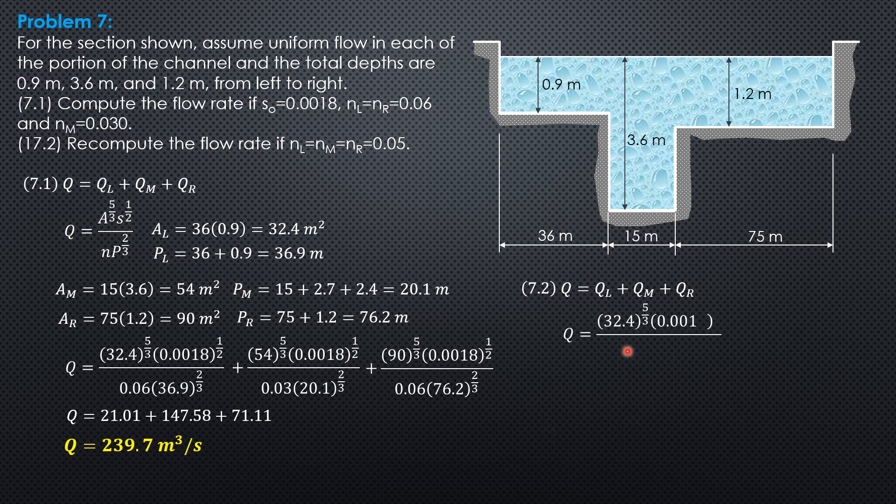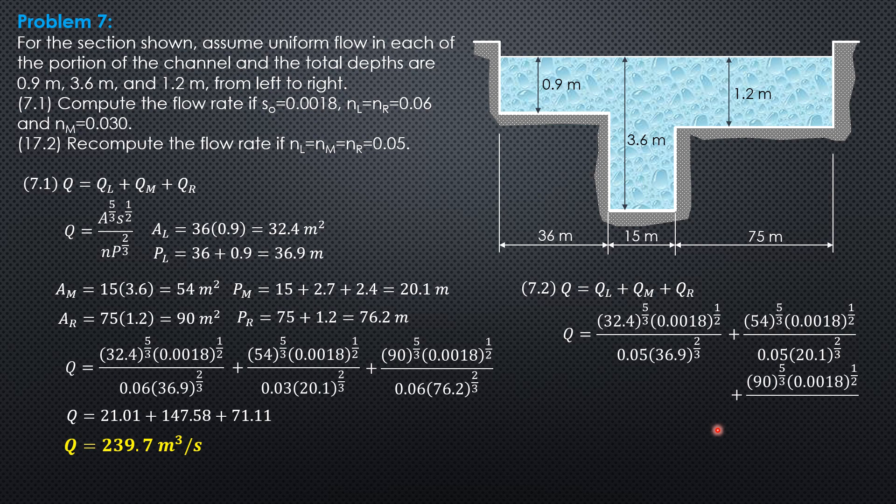Area 32.4 to the 5/3, 0.0018 to the 1/2, 0.05, 36.9 to the 2/3 plus 54 to the 5/3 quantity 0.0018 to the 1/2 over 0.05 times 20.1 to the 2/3 plus 90 to the 5/3 times 0.0018 to the 1/2 over 0.05 times 76.2 to the 2/3.